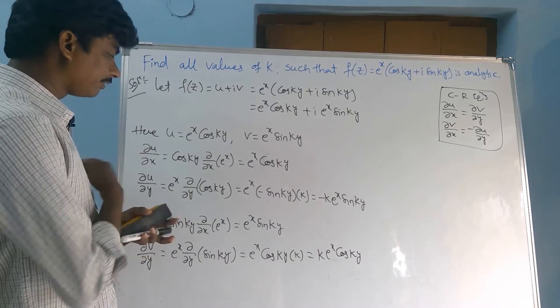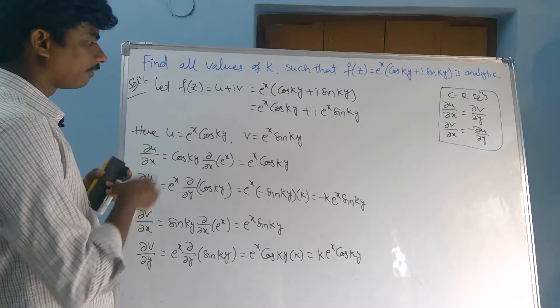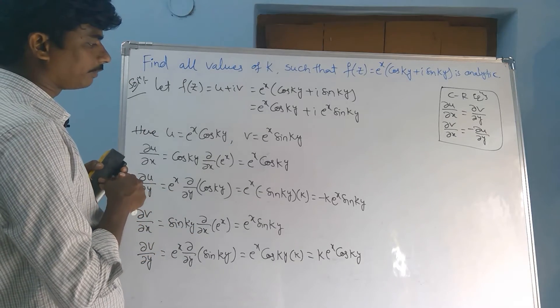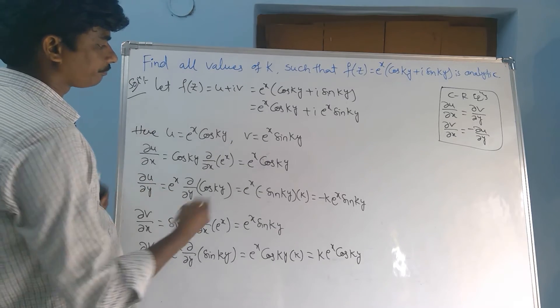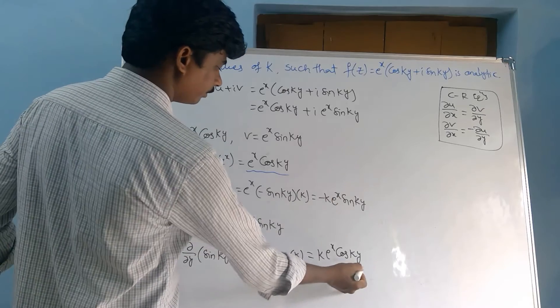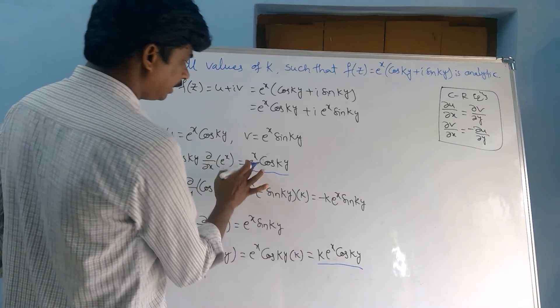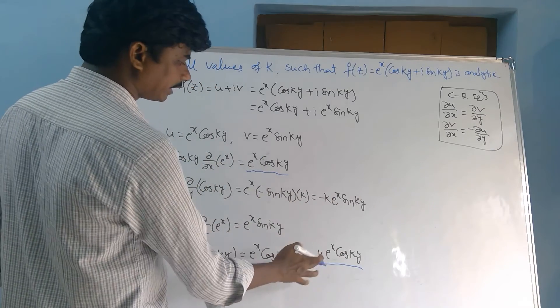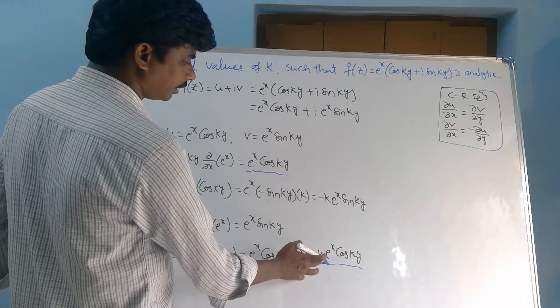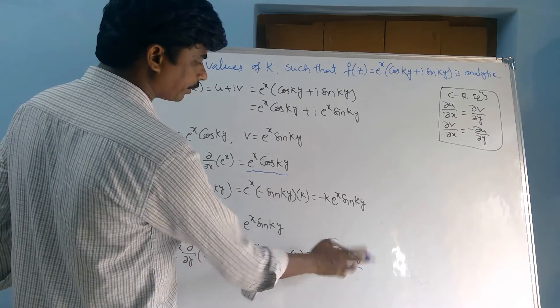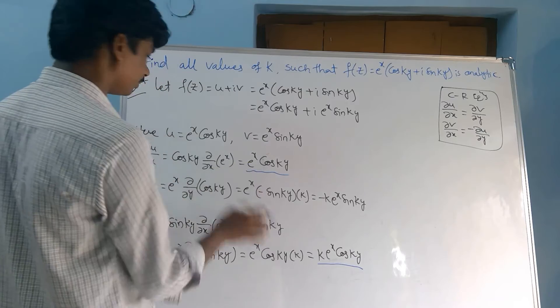For the CR equations to be satisfied, we need ∂u/∂x = ∂v/∂y. That means e^x · cos(ky) = k · e^x · cos(ky).